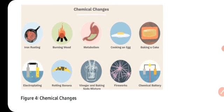Jaisi ki yahan par aap kuch examples dekh sakte ho — iron rusting. Rusting hoti hai iron ki, toh wahan par ek naya substance banta hai jisko hum iron oxide bolte hai. Burning of wood — agar aap kisi lakdi ko jalaate ho, toh woh ek naye form mein, naye substance mein change ho jaati hai — ashes mein change ho jaati hai, smoke and ashes ban jaata hai. Metabolism — jo hamare body ke andar chemical reactions hoti hai, toh wahan pe bhi ek substance se naya substance banta hai. Cooking an egg, baking a cake, electroplating, rotting banana, vinegar in baking soda mixture, fire work, chemical battery — yeh sare chemical changes ke examples hai. In sab mein, in changes ke result mein, koi naya substance aapko banta hua dikhai dega.